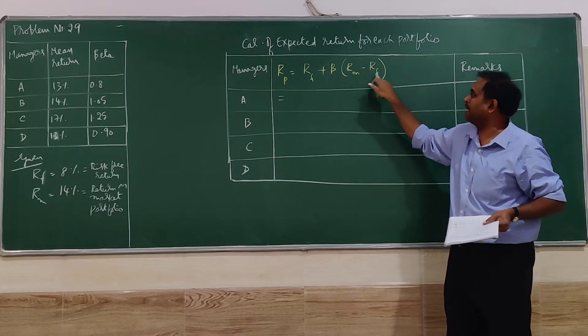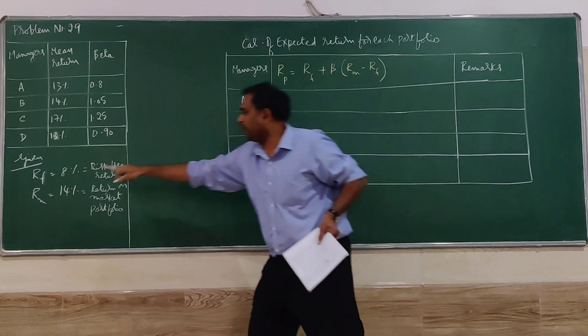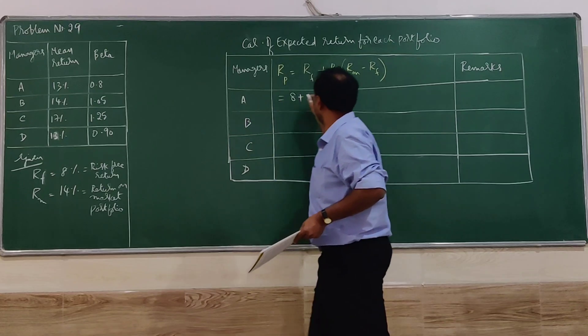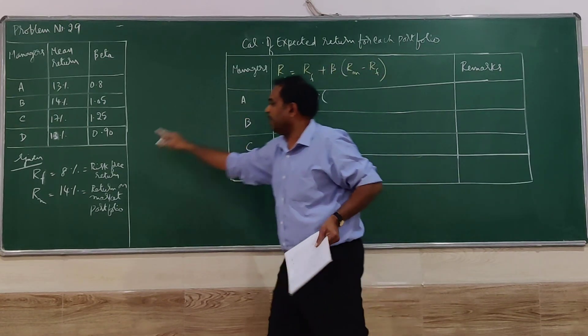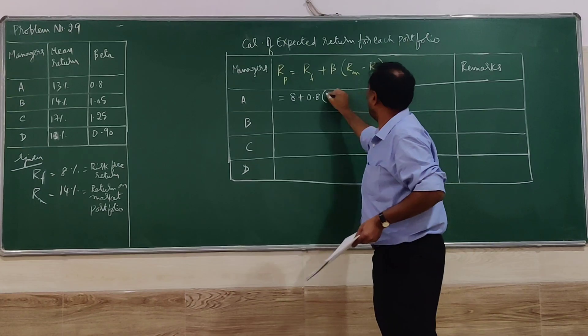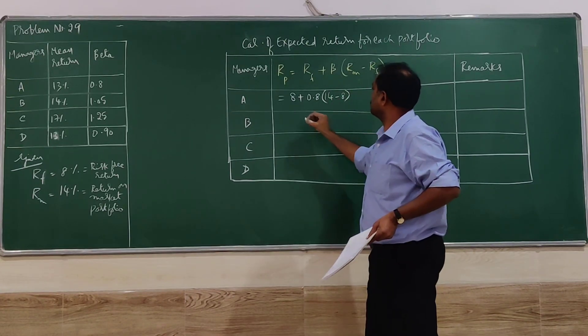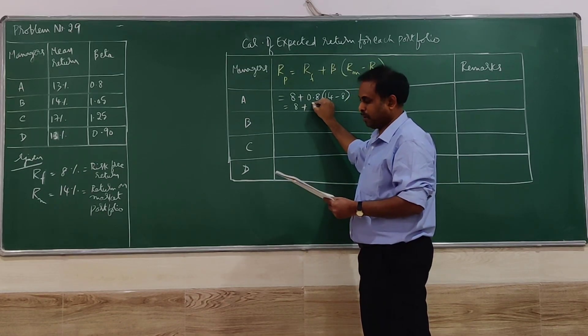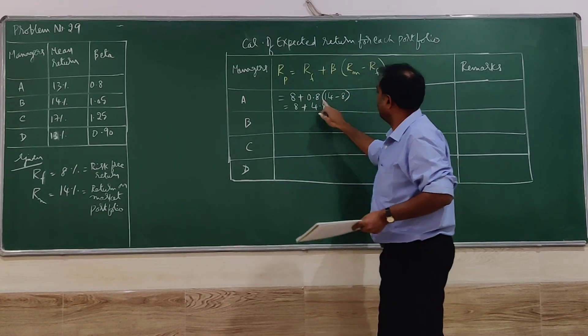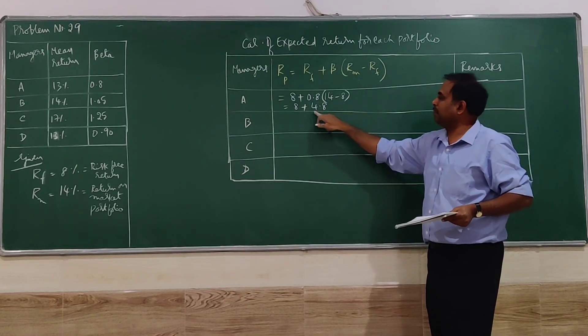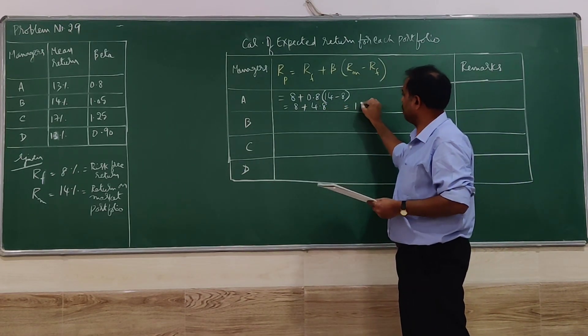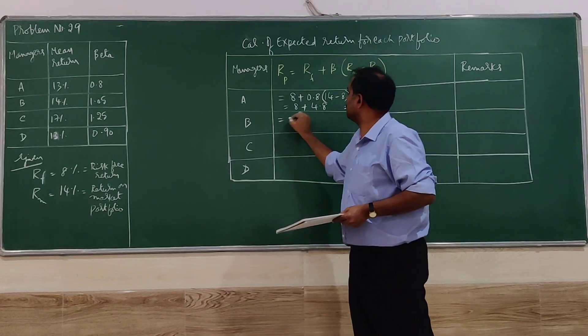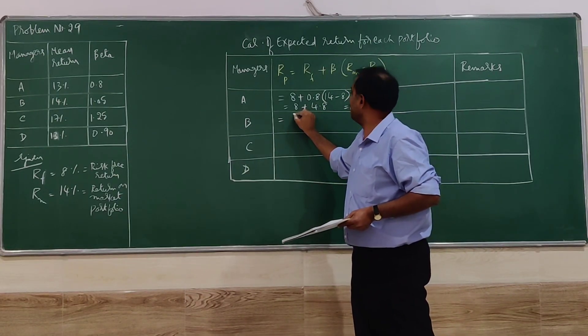So I will go for RF, which is 8%. Beta of A is 0.8, multiplied by RM minus RF. If you simplify, 8 plus 0.8 into 6 will be 4.8, that is going to be 12.8. Next, if you simplify, RF is 8, beta is 1.05, then 14 minus 8. You are going to get 14.3.